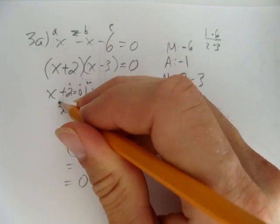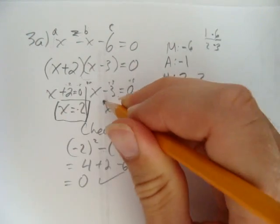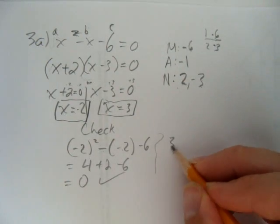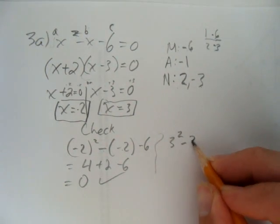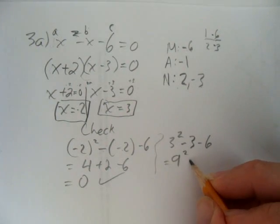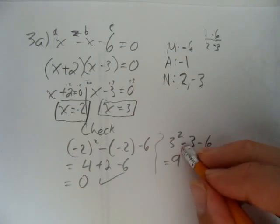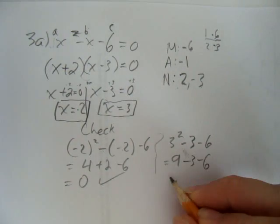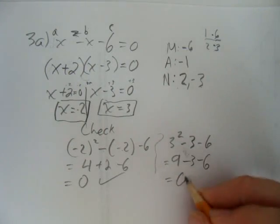What about x equals 3? I should probably put a box around them so I can find them easy again. What about x equals 3? Alright, 3 squared minus 3 minus 6, which gives me 9 squared. Oh, I'm sorry, 3 squared is not 9 squared, it's just 9. Minus 3 minus 6, and 9 minus 3 minus 6 is 0.